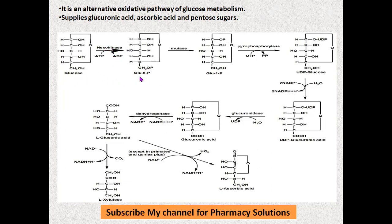In the second step, glucose-6-phosphate in the presence of the enzyme mutase is converted to glucose-1-phosphate. The phosphate is shifted from the sixth carbon atom to the first carbon atom, and the hydrogen is shifted from the first carbon to the sixth carbon atom, forming glucose-1-phosphate.